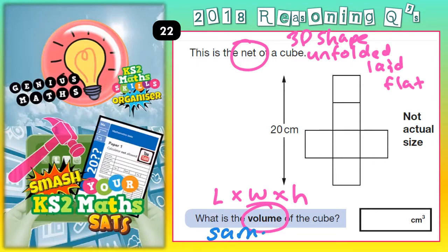So we basically need to find the length. If we found the length, we've also found the width and the height because it's the same on a cube. This is where this 20 comes in. This 20 spans across this face, this face, this face, and this face. So that's four faces.